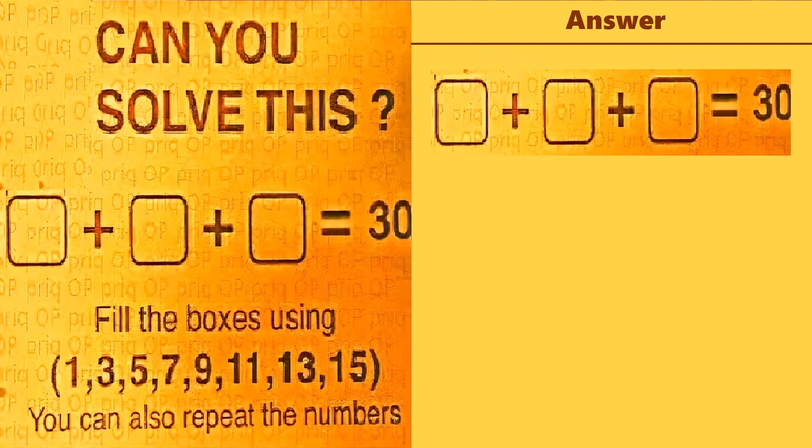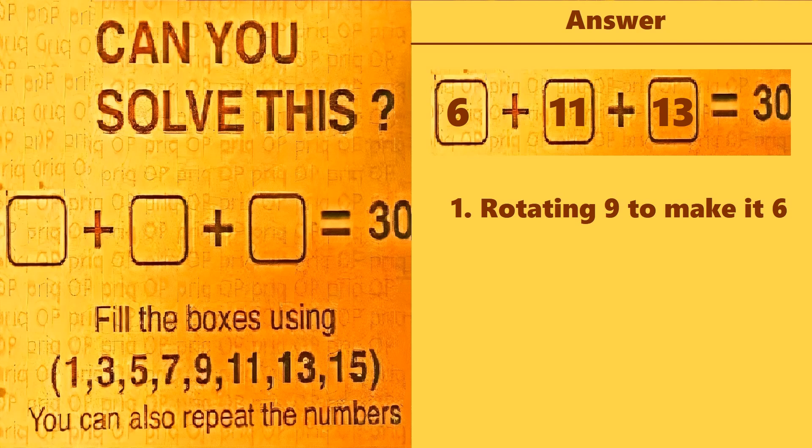Now let's solve this puzzle. The first possible solution we can get by rotating 9 to make it 6, so we'll put 6 in the first box, then 11 in the second, and 13 in the third box, and we'll get 30. But nowhere is it written that we can rotate 9 to get 6, so this won't be the best answer.